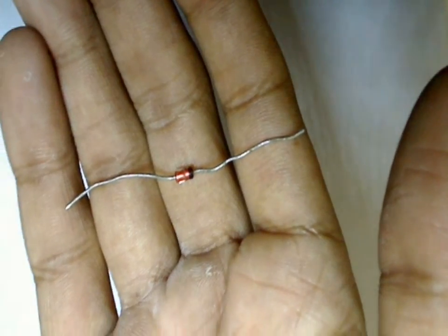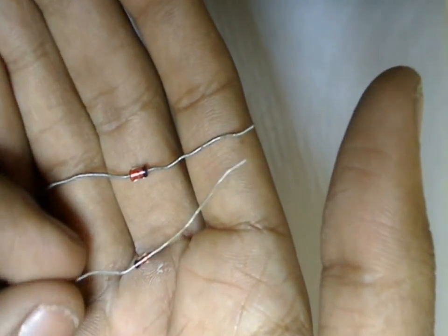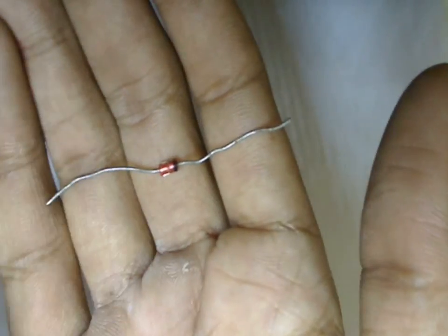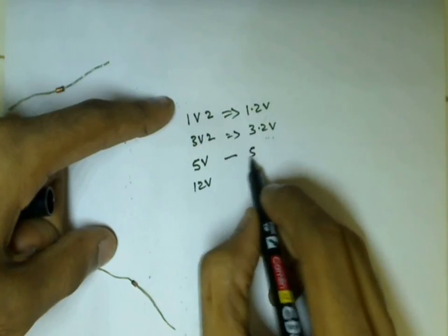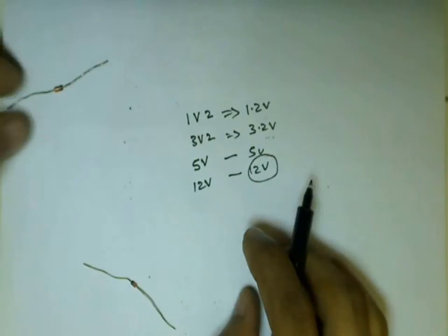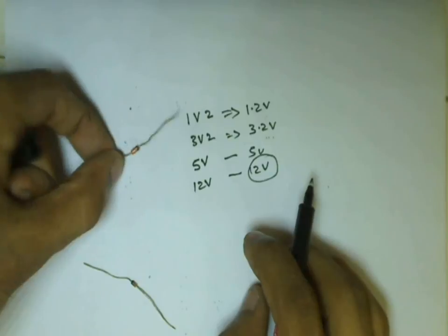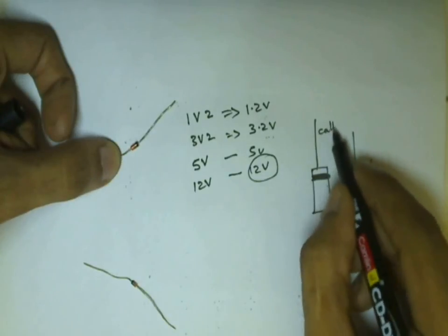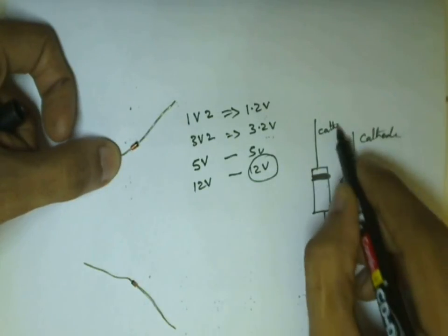This is a Zener diode which looks similar to the signaling diode 1N4148, but you can differentiate between them using the numbers on the diode. On the Zener diode, for voltages such as 1.2 volts and 3.3 volts, the voltage is given as 1V2 and 3V3. The cathode of the Zener diode can be identified using the black line marked on the Zener diode.